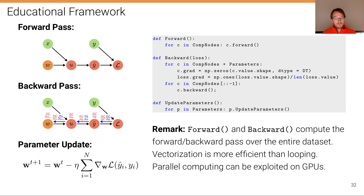Furthermore, if we have GPU hardware available, we could even parallelize this computation, because the forward pass of each individual data point is independent of every other data point, and the backward pass of each individual data point is likewise independent. So with parallel computing hardware, we can run all forward passes and backward passes in parallel.